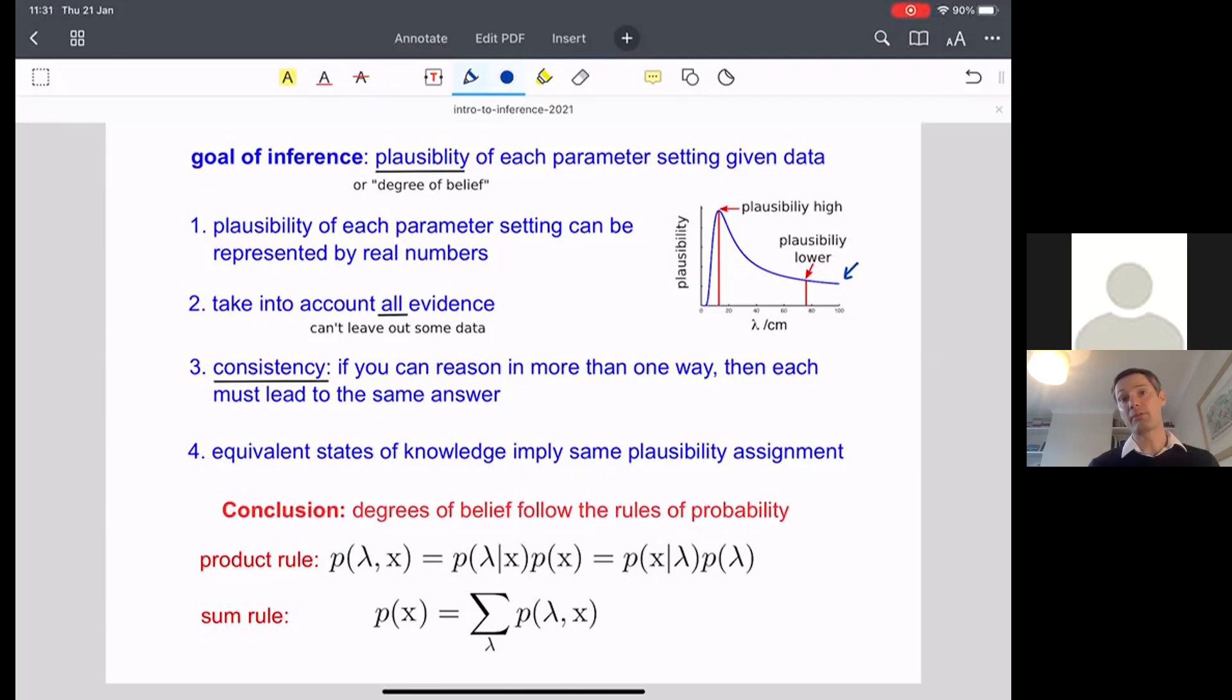And given those four axioms, it's going to turn out that the only way to manipulate these beliefs is to follow the rules of probability, use the product rule or the sum rule.